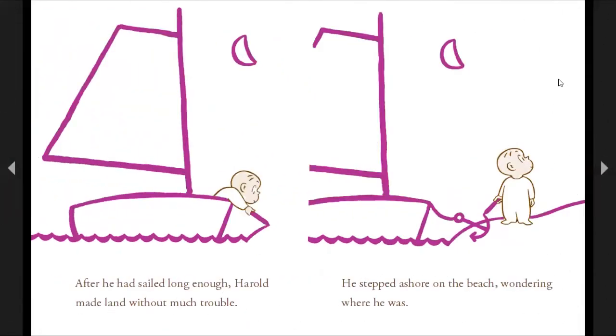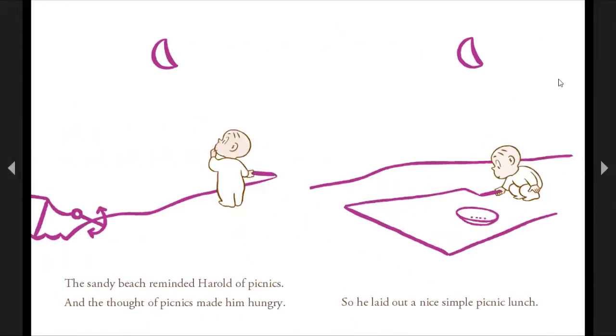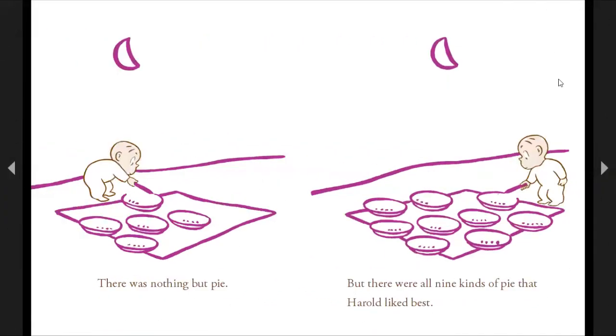After he had sailed long enough, Harold made land without much trouble. He stepped ashore on the beach, wondering where he was. The sandy beach reminded Harold of picnics. And the thought of picnics made him hungry. So he laid out a nice simple picnic lunch. There was nothing but pie. But there were all nine kinds of pie that Harold liked best.